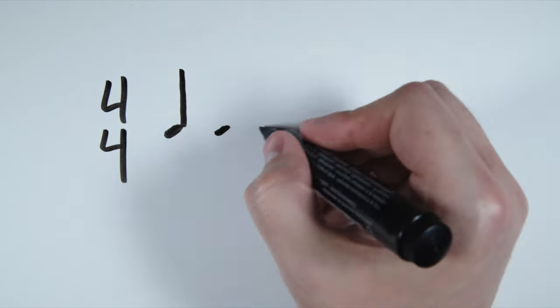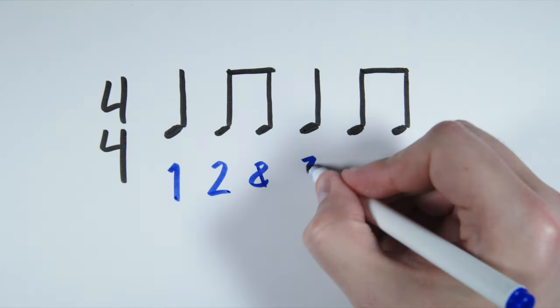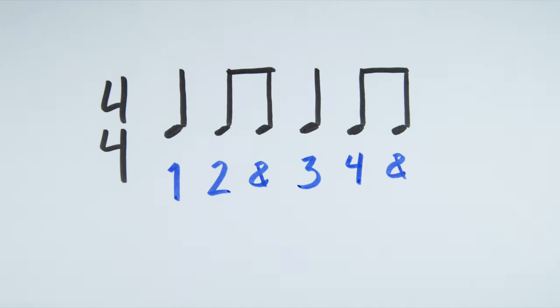Now let's look at combining quarter notes and eighth notes. Let's take this measure for example. A quarter note, two eighth notes, a quarter note, and two eighth notes. It would be counted one, two-and-three, four-and. If we counted this with our metronome, it would sound like this. One, two-and-three, four-and.